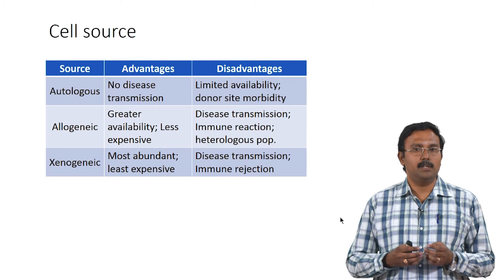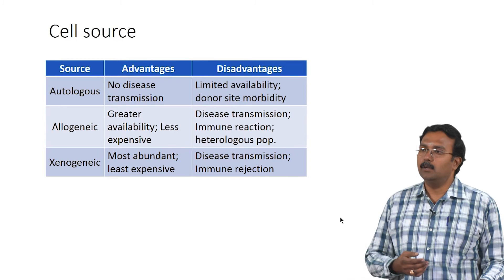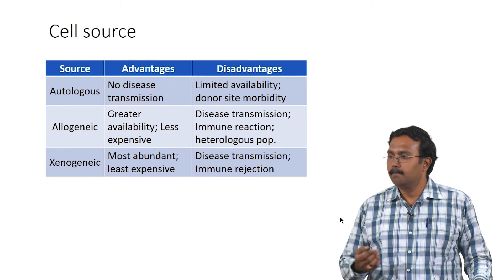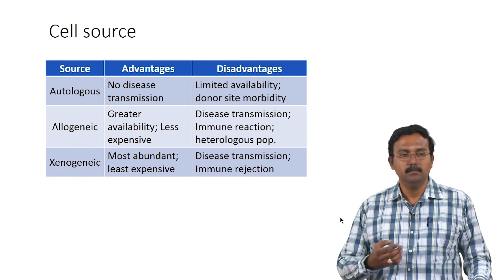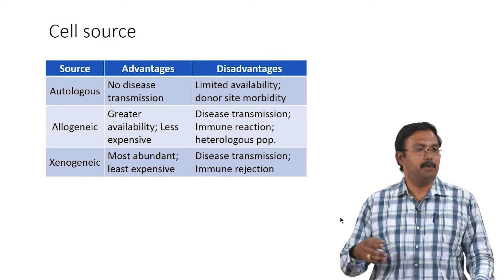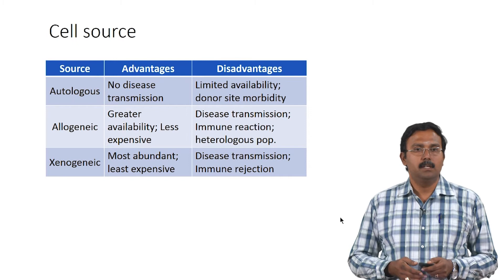People try to develop technologies so that they can expand cells. You can only harvest a certain number of cells — you cannot harvest all the cells needed for creating a tissue. You harvest some number of cells and then grow them by providing the right environment and nutrients, then use this cell population for regeneration. People have developed different technologies for different types of cells and are working on improving this further.